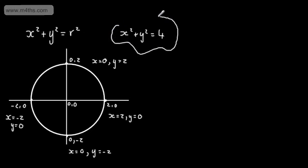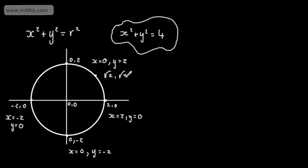x squared plus y squared equals 4 gives us a radius of 2. This is a locus of points — a set of points that obey this rule. I could pick another point, say with x-coordinate root 2 and y-coordinate root 2. Squaring root 2 gives 2, and squaring root 2 gives 2, and 2 plus 2 equals 4. So that point lies on our circle.